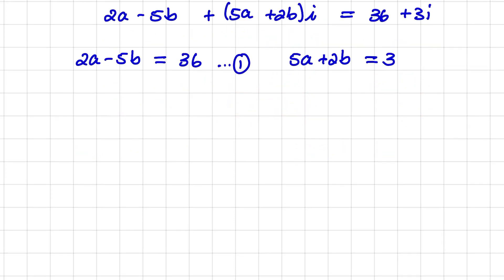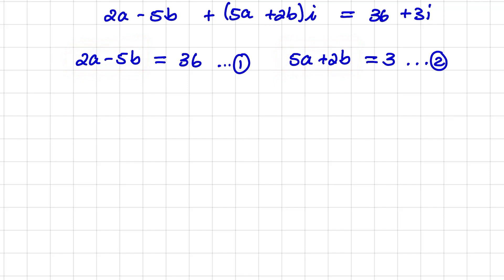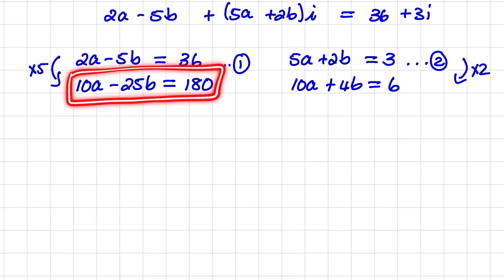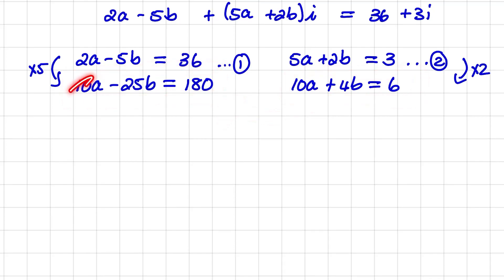Now we have two equations and we can solve for a and b simultaneously. I'm going to create a 10a term in both equations. Multiplying the first equation by 5 gives 10a − 25b = 180. Multiplying the second equation by 2 gives 10a + 4b = 6. I can eliminate 10a by subtracting one equation from the other using the elimination method, giving 10a − 25b = 180.